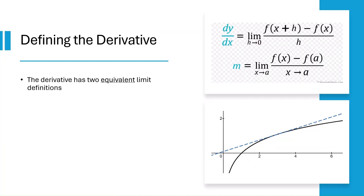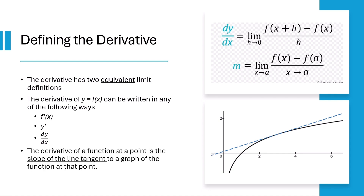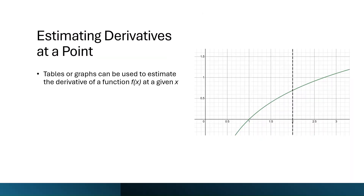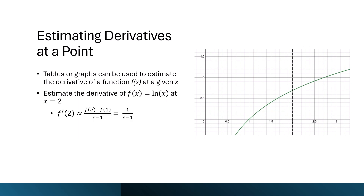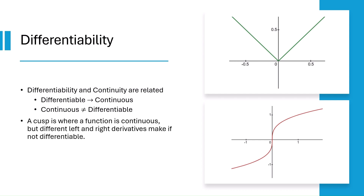The derivative is defined by either of the limit definitions shown to the right. It has a few different notations: f prime of x, y prime, and dy/dx. The derivative of a function is the slope of the tangent line at that point. When exact derivatives aren't available, you can estimate the slope of the tangent line at a point using tables or graphs — just find the slope using two points near the x value. Differentiability implies continuity, but continuity does not imply differentiability. A function is differentiable at a point if it is both continuous and smooth there. Sharp corners, cusps, or discontinuities mean the derivative does not exist at that point.